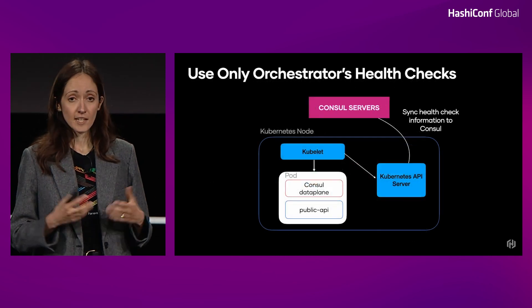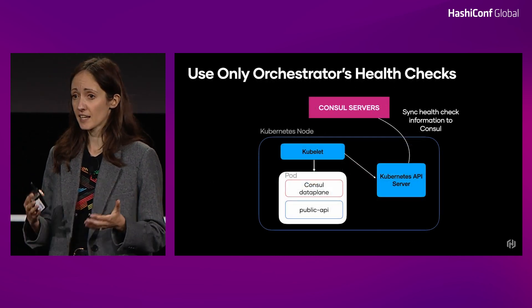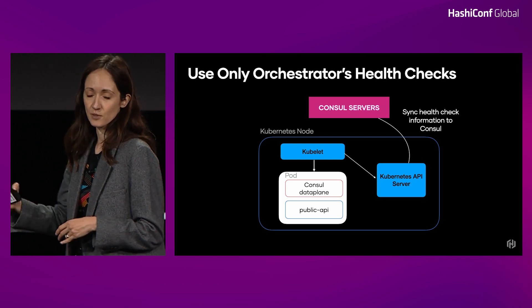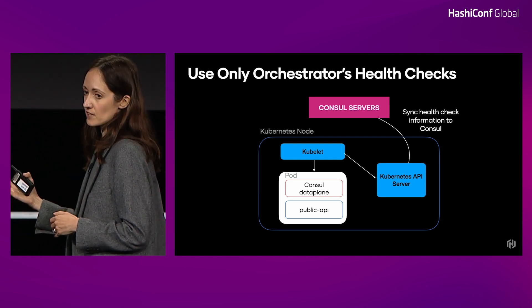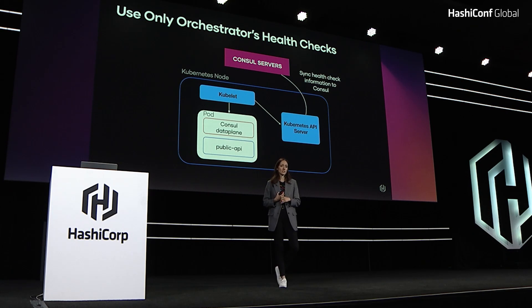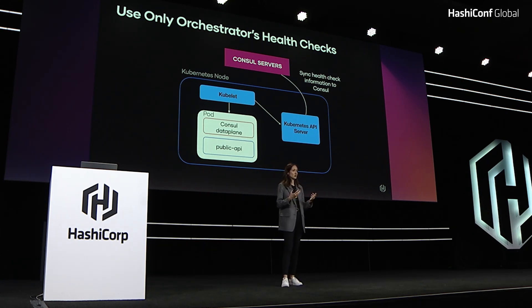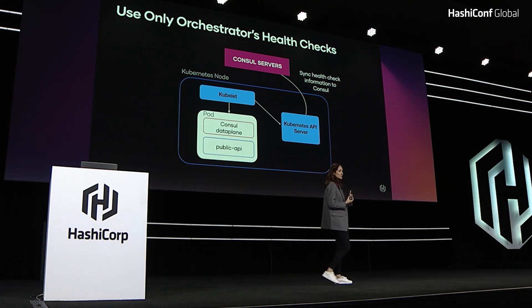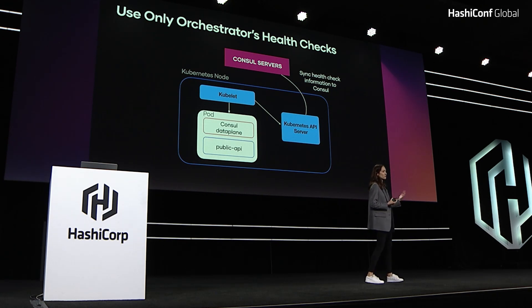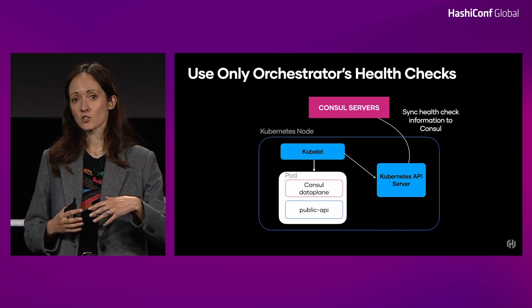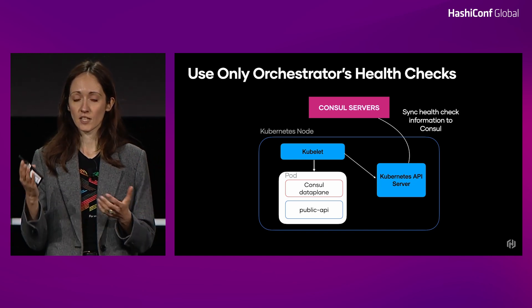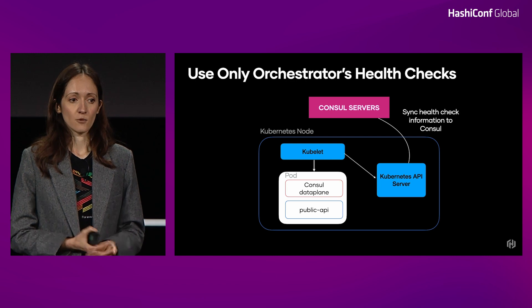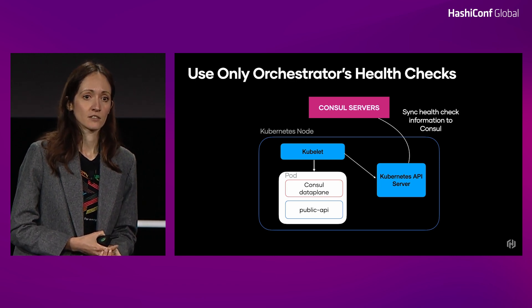The second problem was duplication of health checking. By removing Consul clients, we completely got rid of that problem. We'll now use your container health checks directly. Your container orchestrator — in this case Kubernetes — will run those health checks and inform the Kubernetes API of the status. What we do in Consul is just sync that status into Consul so that we can still route traffic correctly.